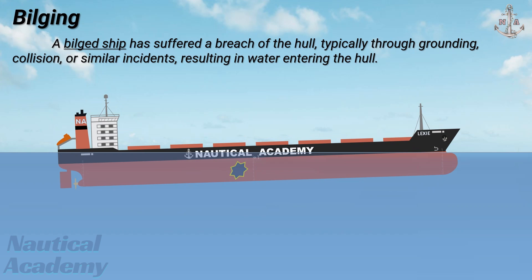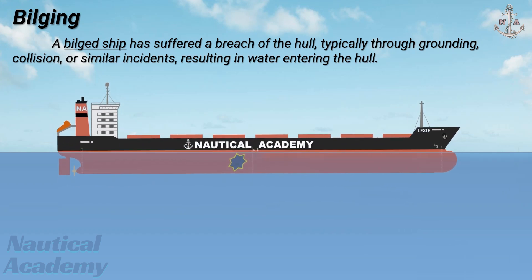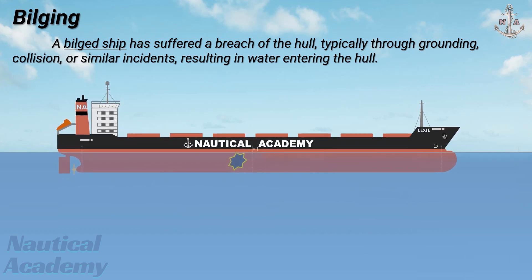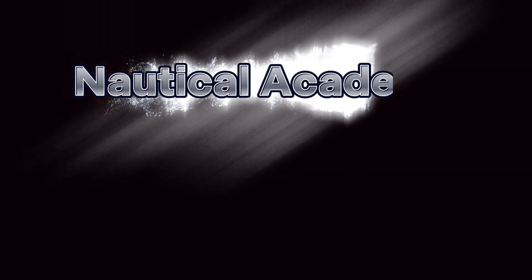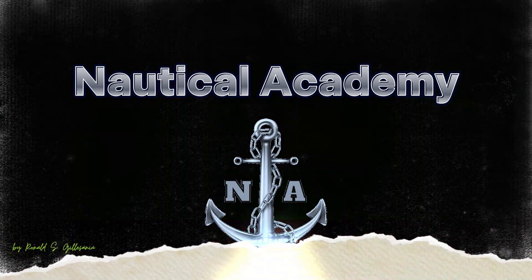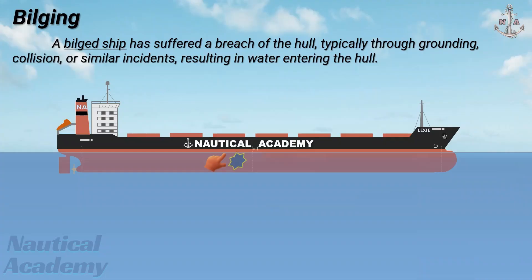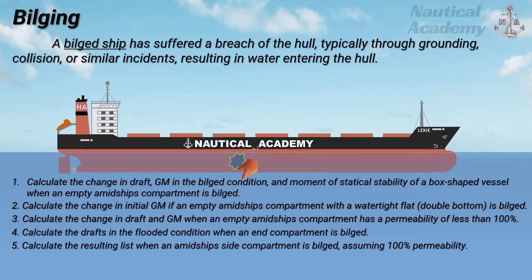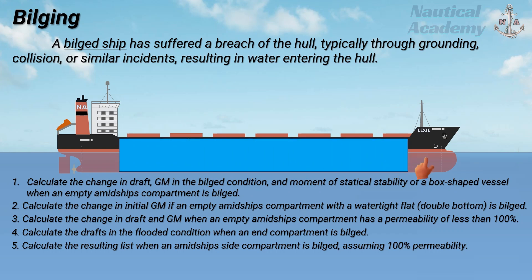In some cases, the flooding may improve stability depending on the location and nature of the damaged compartments. Flooding of compartments can affect a ship's draft and stability in various scenarios. While the calculations often use box-shaped vessels for simplicity, the underlying principles apply equally to ship shapes, since many ship hulls closely approximate a box shape when the curvature at the ends is ignored.